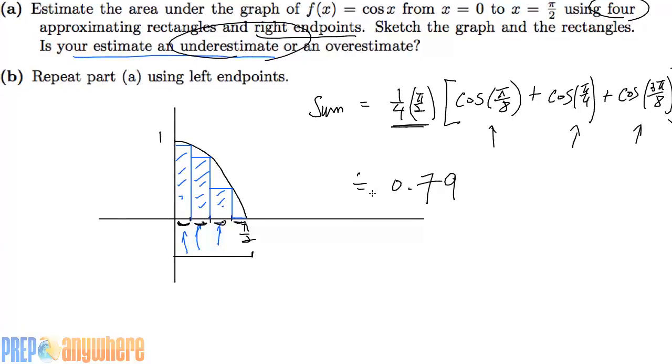Now part B says do the same question except do it from the left endpoint. So from the left endpoint, we're going to take initially at x equals 0 as the height, which is right there. And this is the first rectangle, all the way up. It goes above the graph.